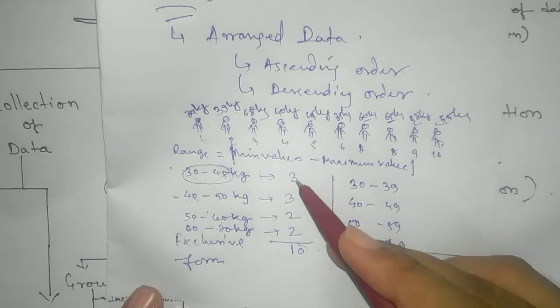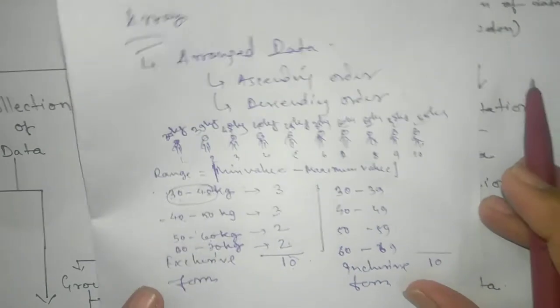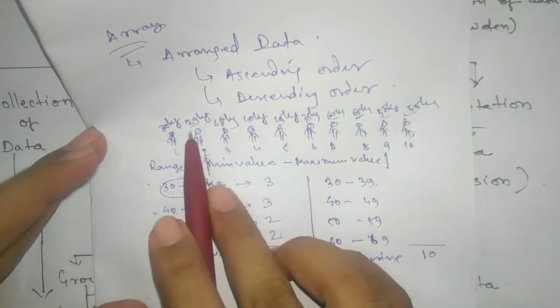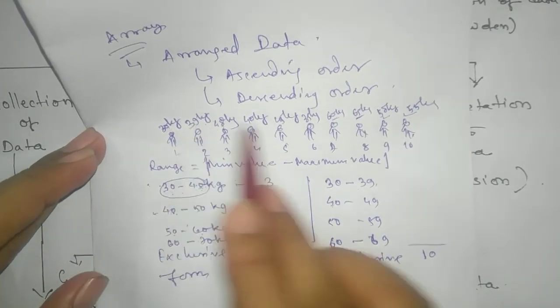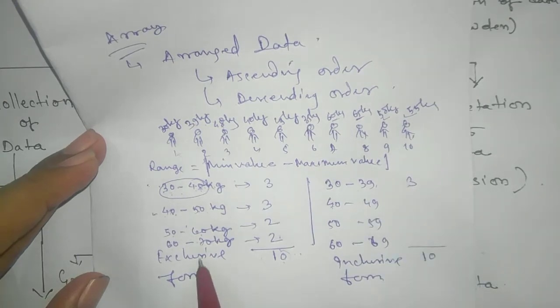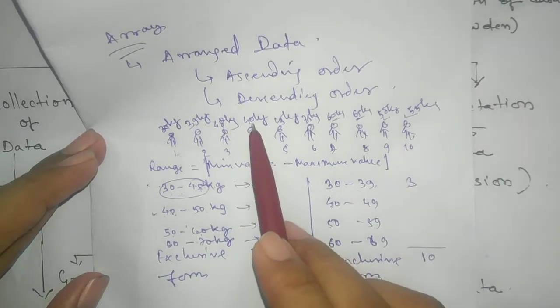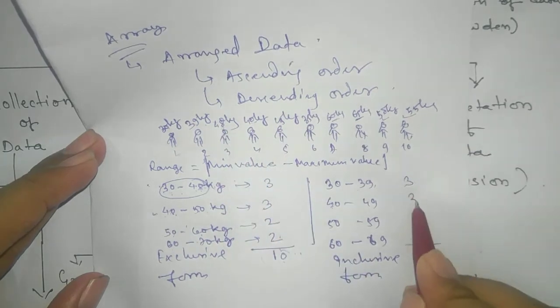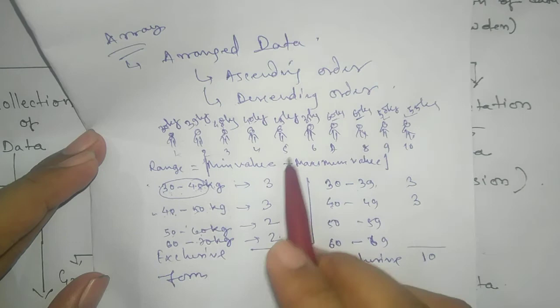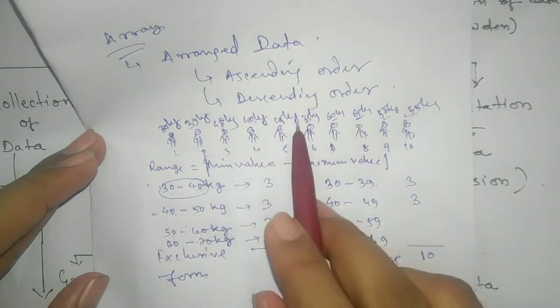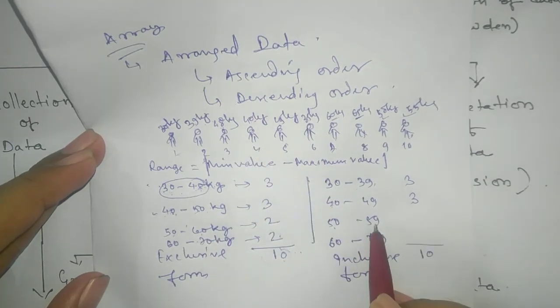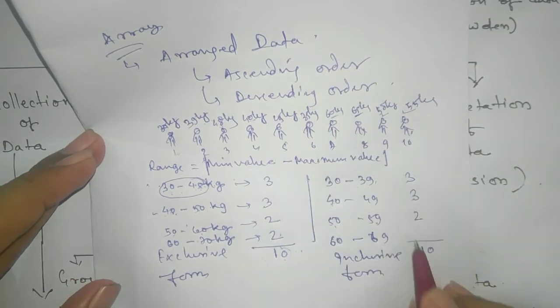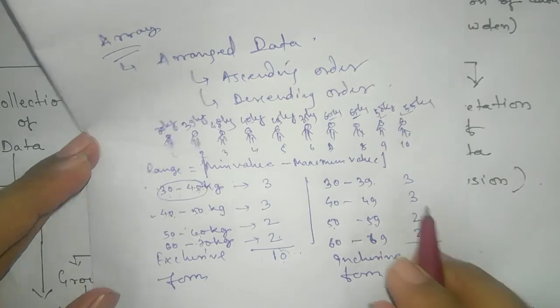But let's check that this will be same or not. For 30 to 39, yes two person are one and two. And more three, so three is same, no problem. Another one 40, 48, 45, here also we are getting same. Here also same.